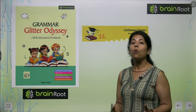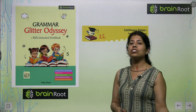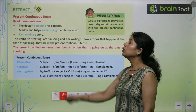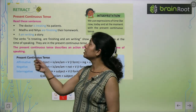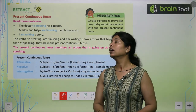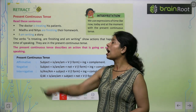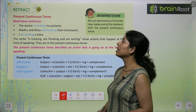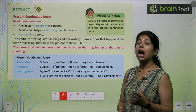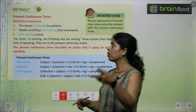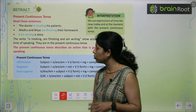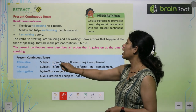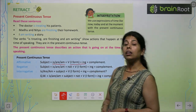The name of the chapter is Continuous Tense. In continuous tense, something is happening continuously, whether it's past, present, or future. Present Continuous Tense: for example, 'The doctor is treating his patient.' You have to add the verb plus -ing. For affirmative sentences: subject plus is/am/are plus first form of verb and -ing.